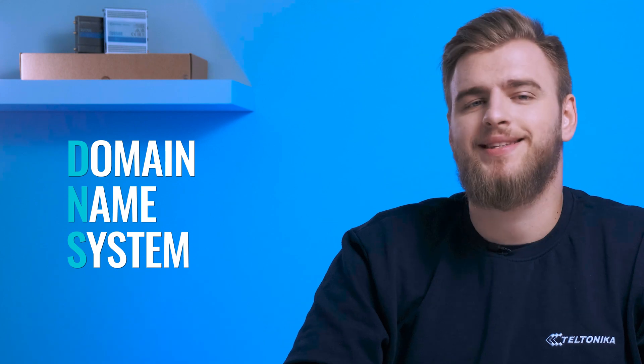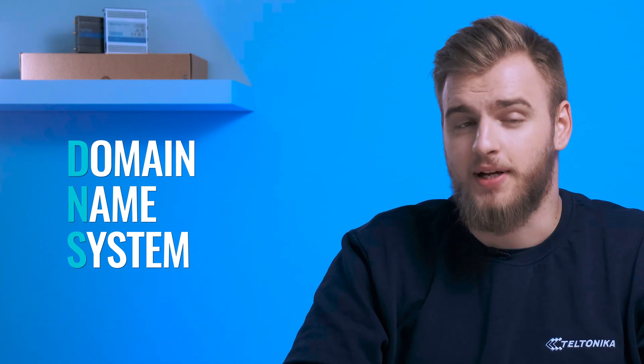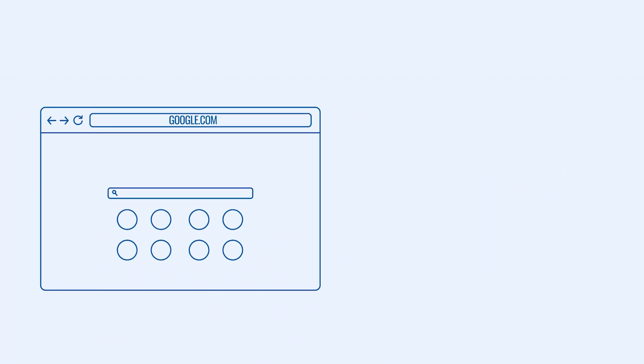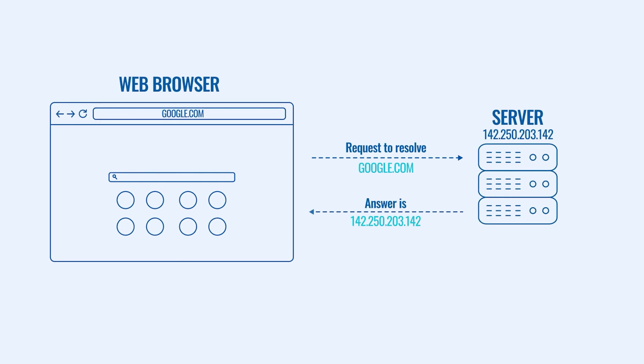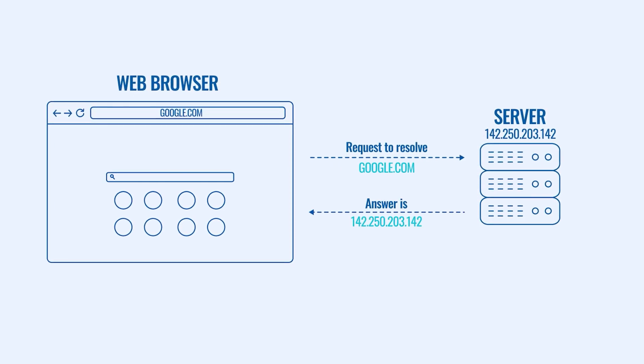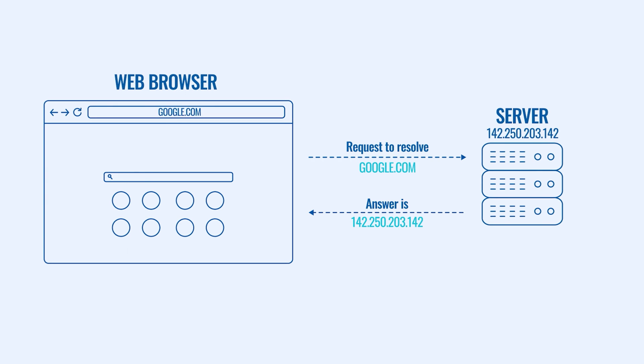DNS, or domain name system, helps us easily access websites on the internet. When you type a website's name into a search bar, a browser leads you to the website not by the words you typed in, but by the IP address assigned to them. This is what DNS is responsible for. Domain name systems hold all information about website IP addresses and names related to them.